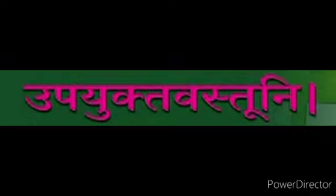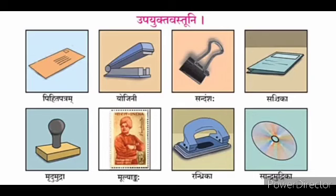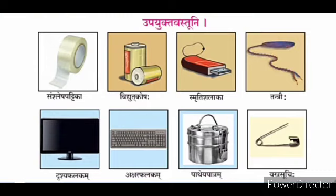First, Upayukta Vastuni. Envelope - Pihita Patram; Stapler - Eugenie; Paper Pin - Sundownshah; File - Sanchika; Stamp - Murudu Mudra; Postal Stamp - Mulyankah; Punching Machine - Randrika; CD - Sandra Mudra; Cello Tape - Saushlesha Patrika; Batteries - Vidyut Koshah; Pen Drive - Smruti Shalaka; Wire - Tantrihi; Monitor - Drushya Falakam; Keyboard - Akshar Falakam; Tiffin Box - Paatheya Patram; and Safety Pin means Vastra Suchi.